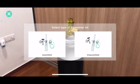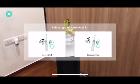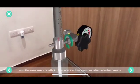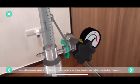Select the type of flow meter kit. Assemble the pressure gauge to the humidifier by rotating the screw in a clockwise direction and tightening with a size 17 spanner.